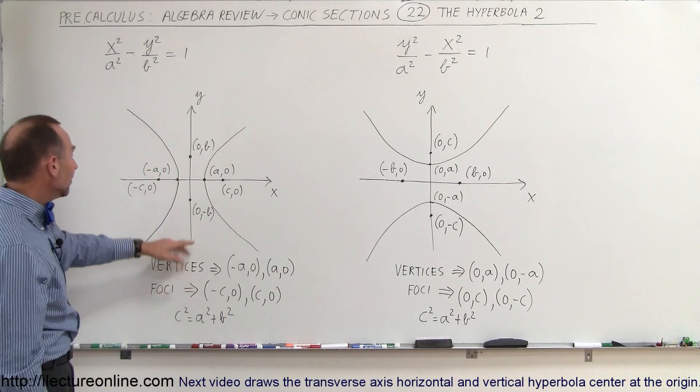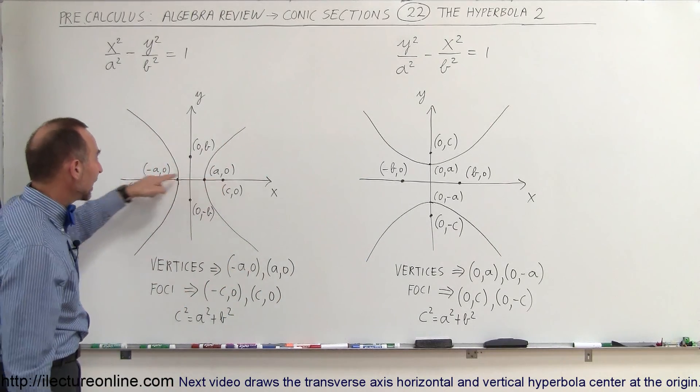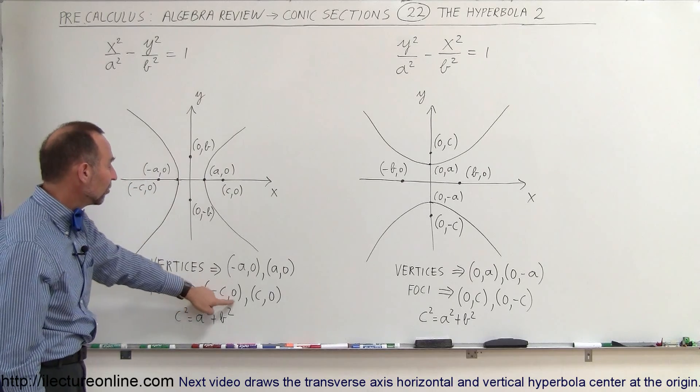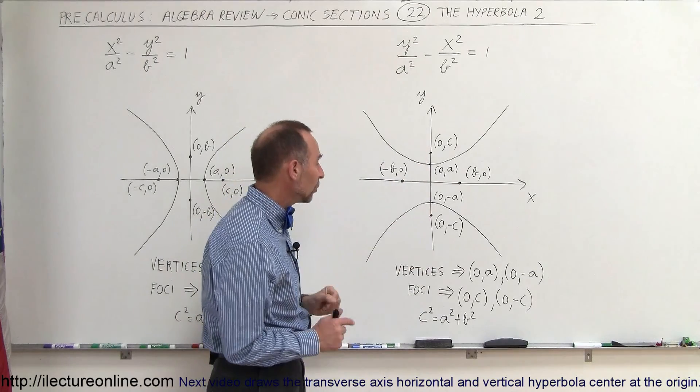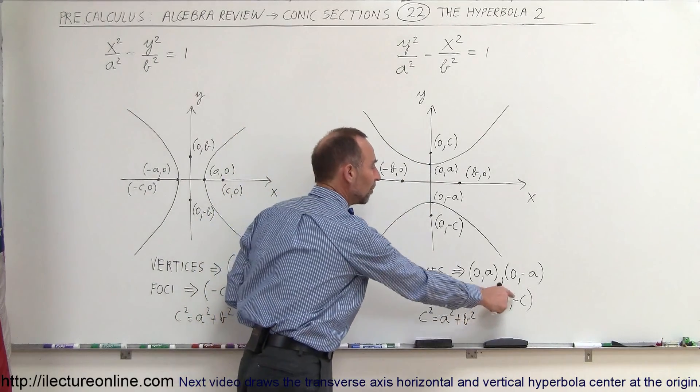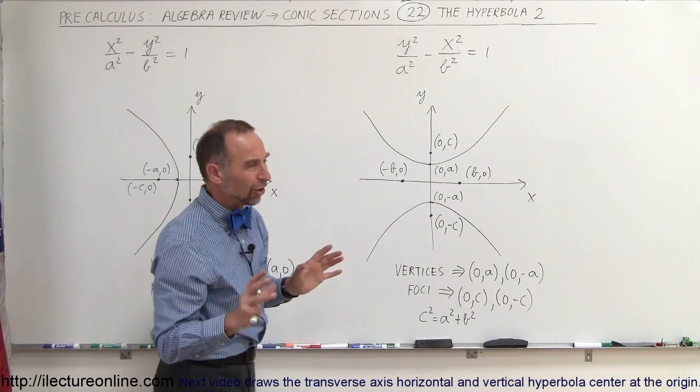The foci can be found. In this case, the foci will be on the x-axis, and so it's minus C, 0 and C, 0. And in this case here, you can see that the foci will be on the y-axis, so it's 0, C and 0, minus C. So subtle differences here.